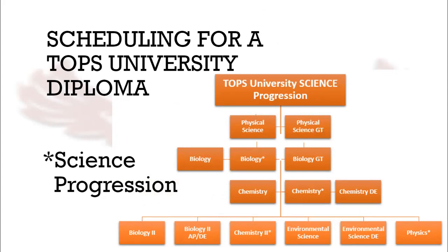Once they have successfully passed Chemistry, students then have a choice for their 4th science from this list: Biology 2, Biology 2 AP Dual Enrollment, Chemistry 2, Environmental Science, Environmental Science Dual Enrollment, and Physics. Students should look through the course descriptions on the CHS webpage for more guidance on which course may fit their interests and postsecondary plans.